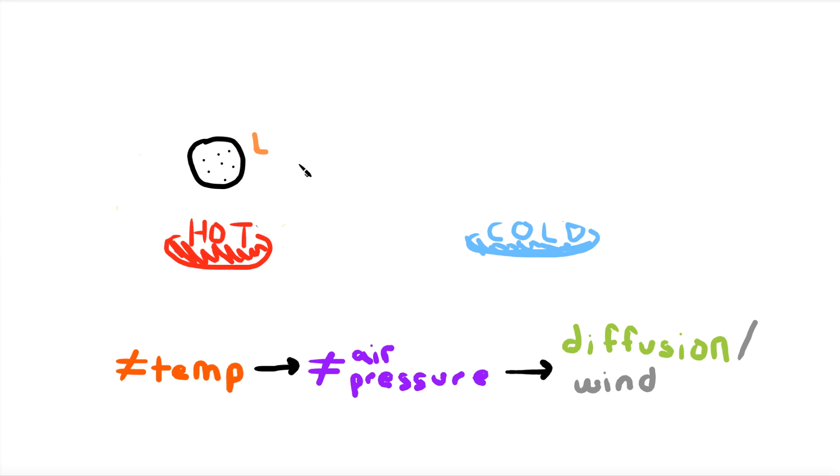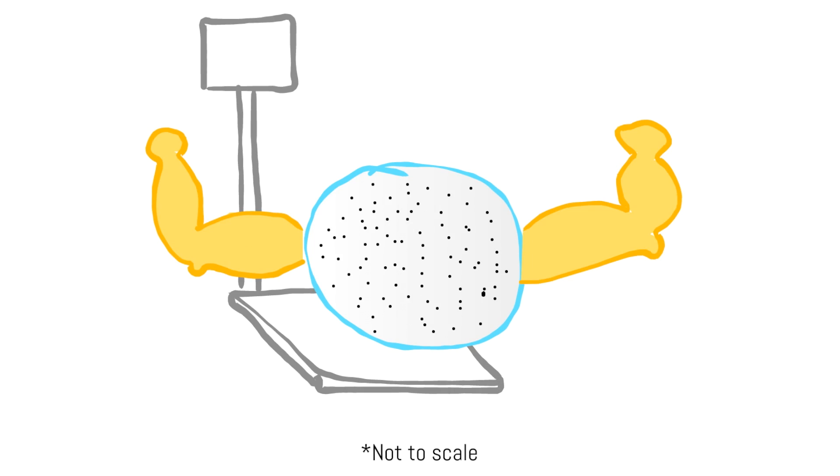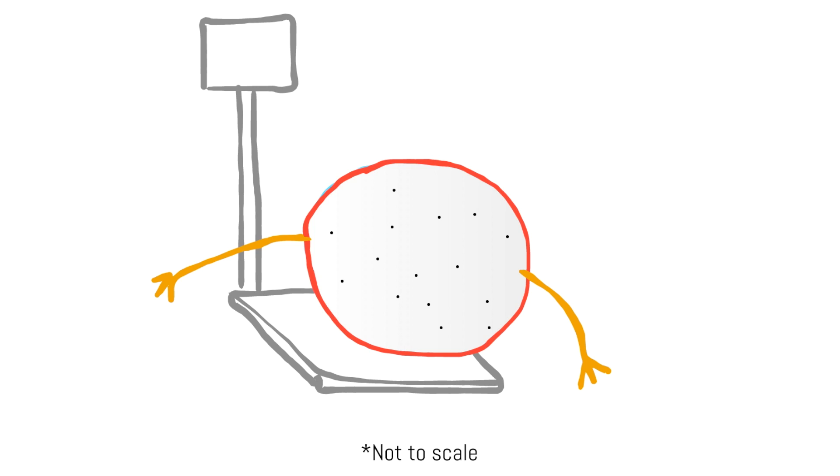The hot area will become low pressure because the heated air parcel expands and becomes lighter or less dense. The cold area will become high pressure because the cooled air parcel contracts, becoming heavier or more dense. It's like if you measure your weight on a scale. The more massive and dense you are, the more pressure you exert, and vice versa.